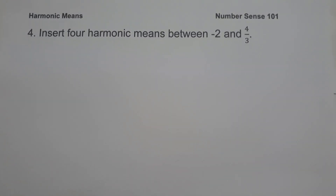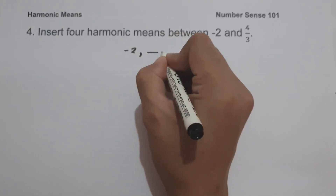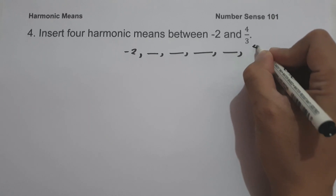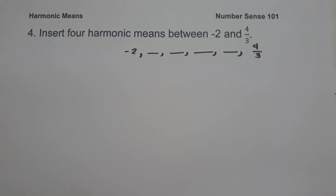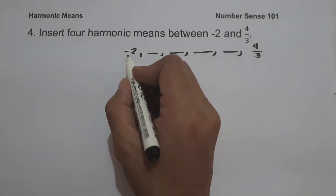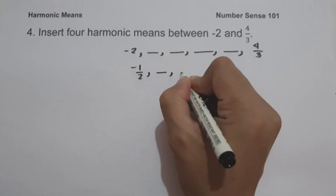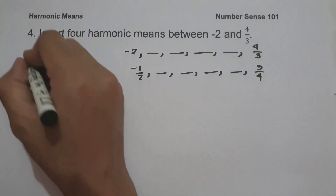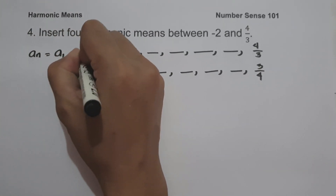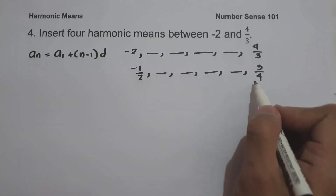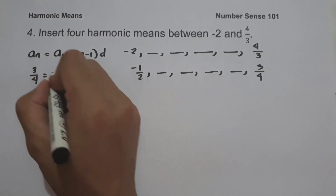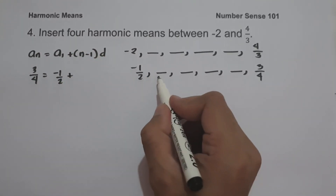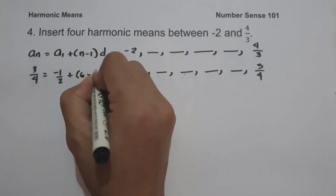On example number 4, insert four harmonic means between negative 2 and 4 over 3. We illustrate: negative 2, then four numbers to insert, then 4 over 3. We find the reciprocals: the reciprocal of negative 2 is negative one half, and the reciprocal of 4 over 3 is 3 over 4. With 6 terms total, we use the arithmetic sequence formula: a sub n equals a sub 1 plus quantity 6 minus 1 times d.